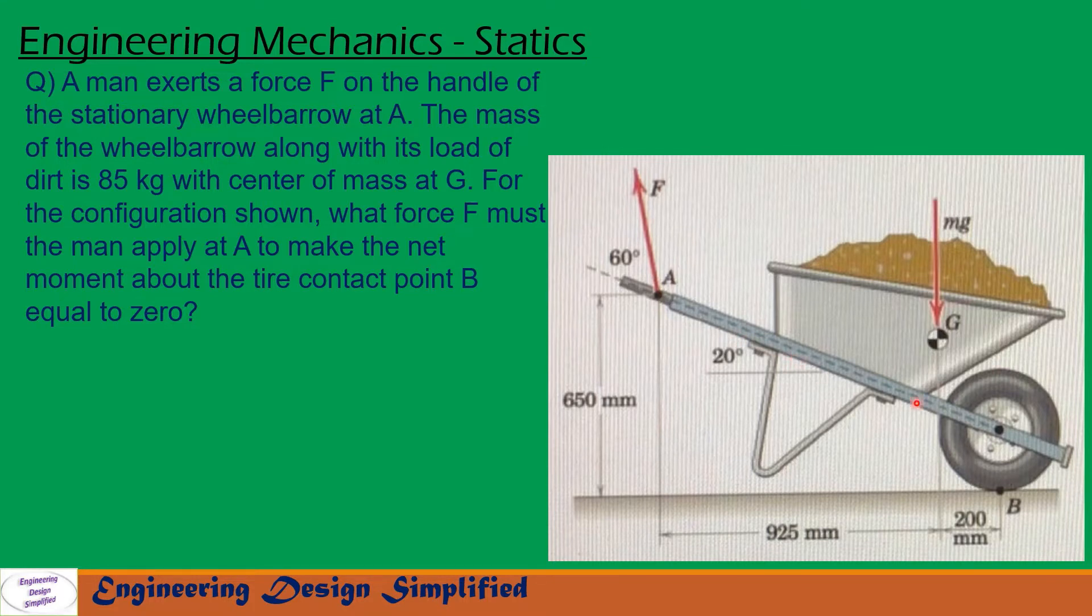The problem given is a wheelbarrow like shown in figure and the mass of the wheelbarrow along with its load is 85 kg acting at center of gravity G. The distance between center of gravity and B, the horizontal distance is 200 millimeter and a man exerts a force and angle between this force and this bar is 60 degrees and this bar is 20 degrees from horizontal. The distance between A and G, the horizontal distance is 925 millimeter and the vertical distance between A and B is 650 millimeters.